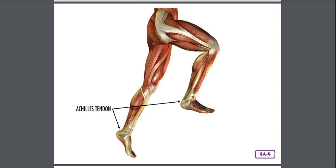One of those leg muscles is your calf muscle. You can feel your calf muscle at the back of your lower leg. Your calf muscle is responsible for much of your movement, helping you bend your knee when you walk or run. It is attached to your heel bone by the longest and most powerful tendon in your whole body — the Achilles tendon.